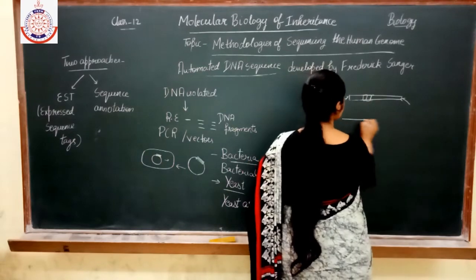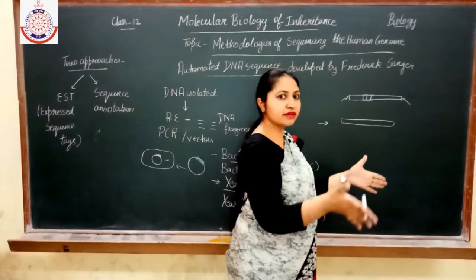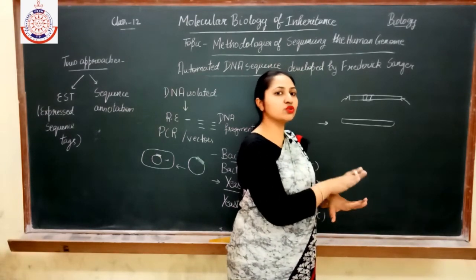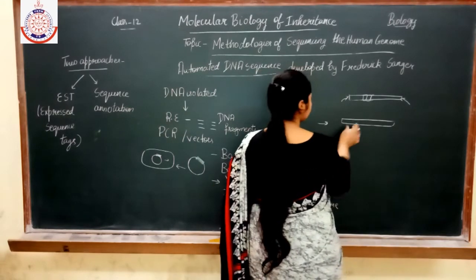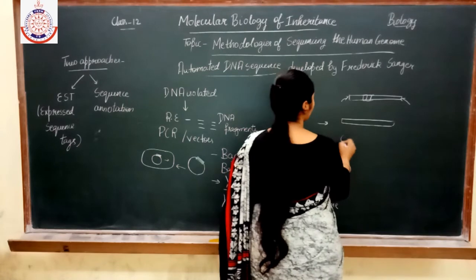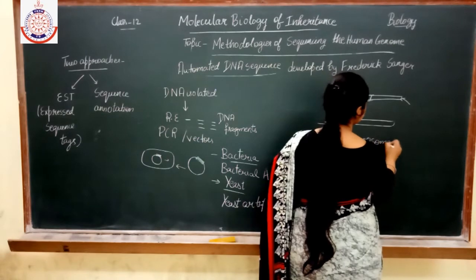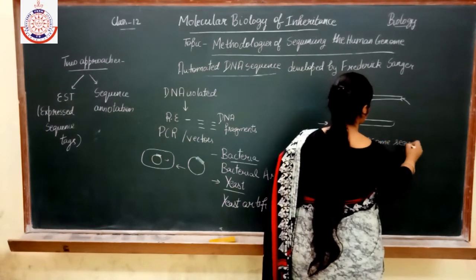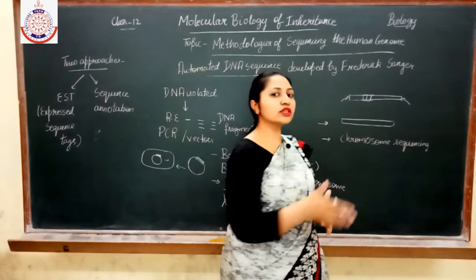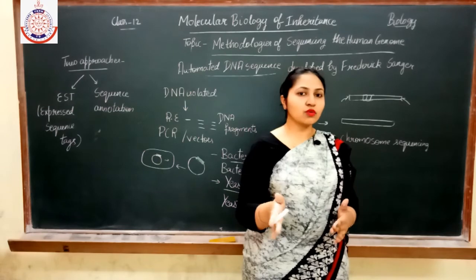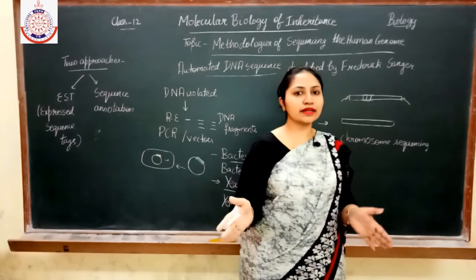If overlapping sequences are present, they are separated, removed, and then the sequences are joined into a common stretch, and the sequence is read. After reading the sequence, we come to know the chromosome sequence. In this manner, all the chromosomes are sequenced one by one — first, second, third, fourth, fifth, and so on — until all chromosomes are sequenced.